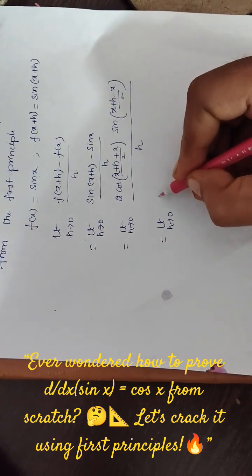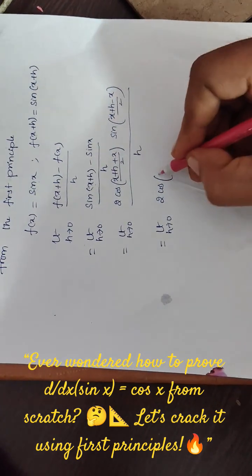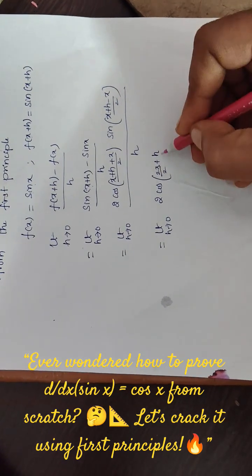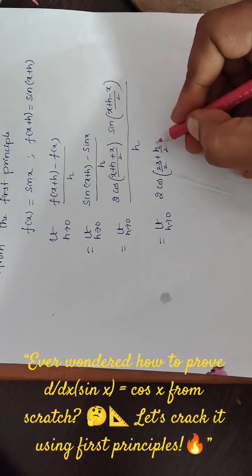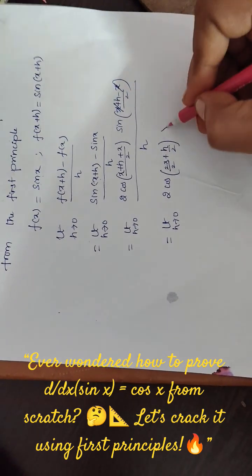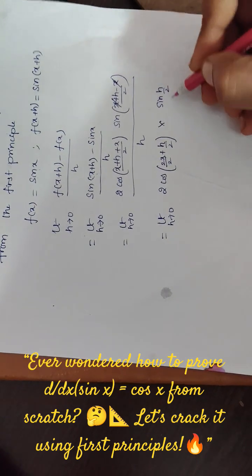That means c minus d by 2, divided by h. Here, limit h tends to 0, 2 cos of x plus x, that is 2x by h, and split it. 2 in the denominator and here plus x minus x cancel. We can write sin h by 2 divided by h.